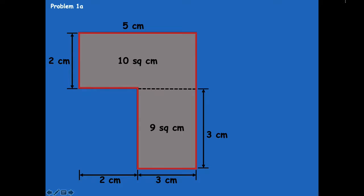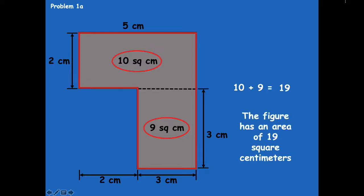So now we need to find the area of the whole shaded shape. I want you guys to find the area of the whole shape. We know that the two areas are 10 square centimeters and nine square centimeters. So go ahead and pause the video, find the area of the whole shape, and then click play when you're ready to go over it together. So we have 10 plus 9 equals 19. The figure has an area of 19 square centimeters.